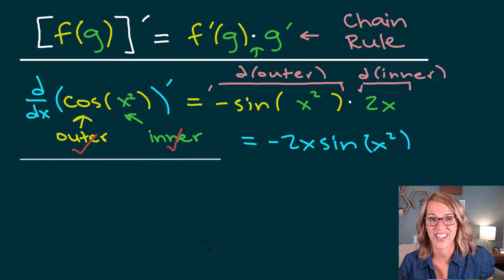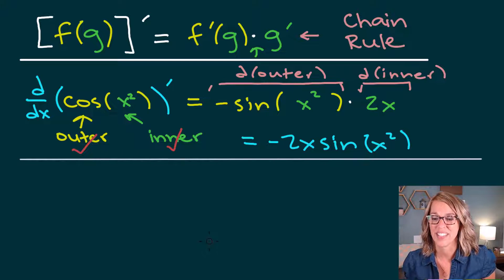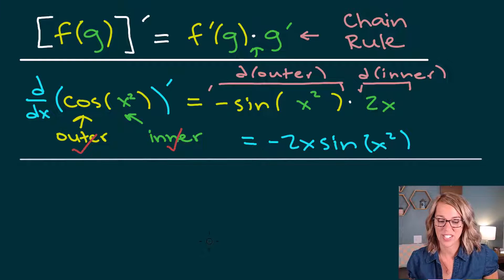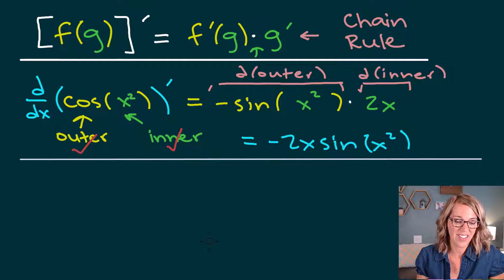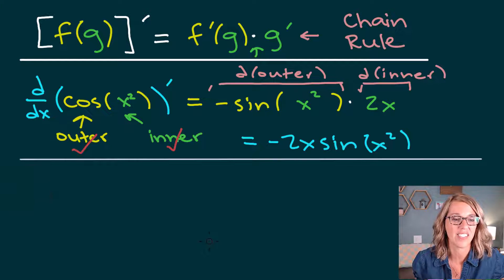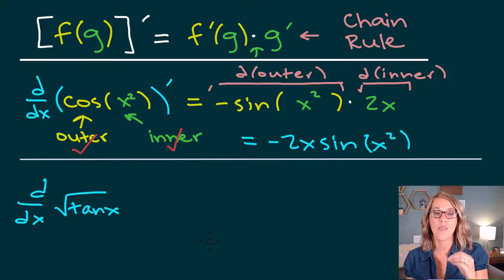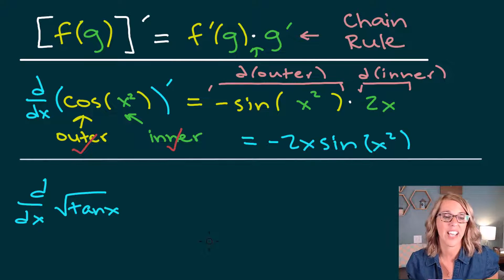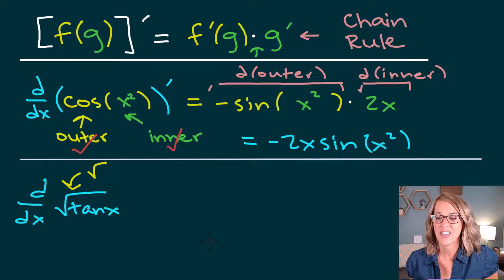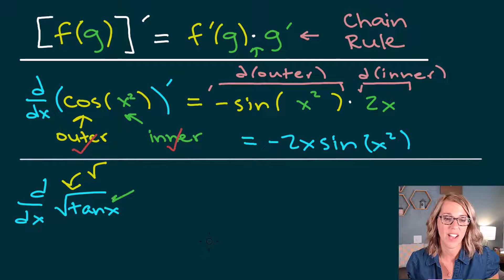Let's look at another example. In our second example, we're going to look at the derivative of the square root of tangent. So d/dx of the square root of tan x. I'm looking for an outer layer — the outer layer is going to be that square root. And the inner layer is my tangent.